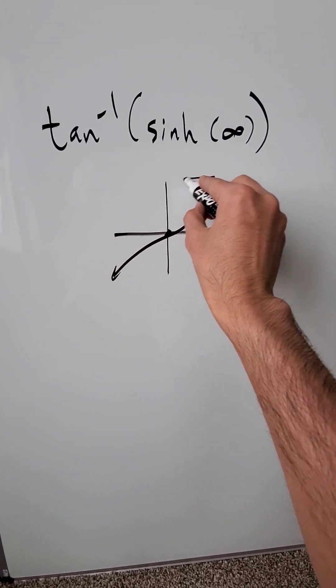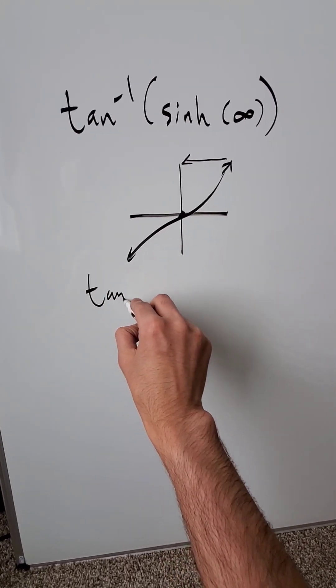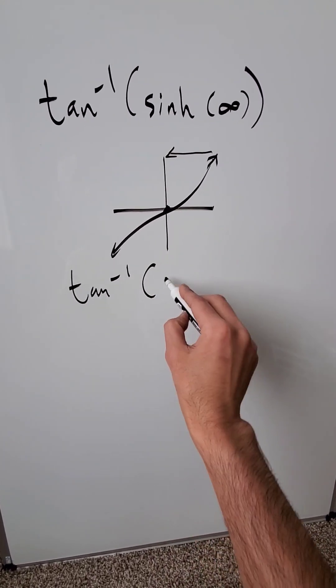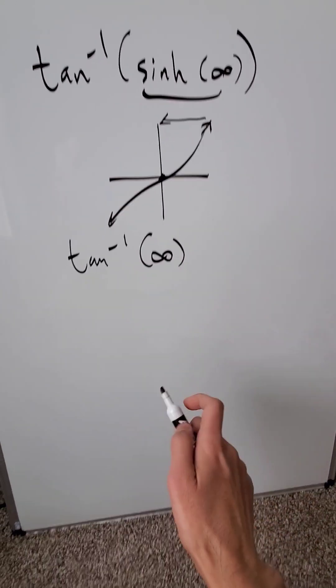x are going towards infinity, your output in terms of the function is infinity. What you are really evaluating is the inverse tan or the arc tan of infinity because hyperbolic sine of infinity is equal to infinity.